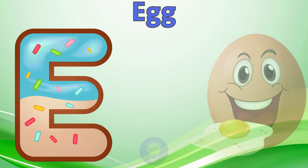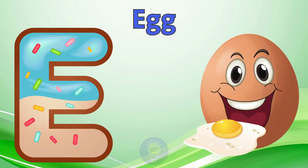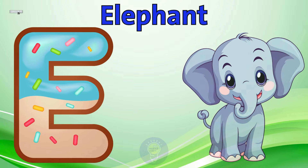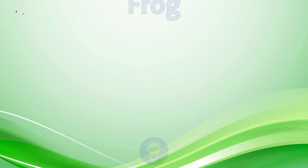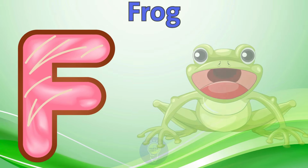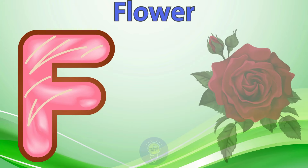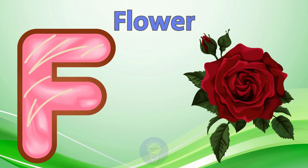E is for Egg. E, E. Egg. E is for Elephant. E, E. Elephant. F is for Frog. F, F. Frog. F is for Flower. F, F. Flower.